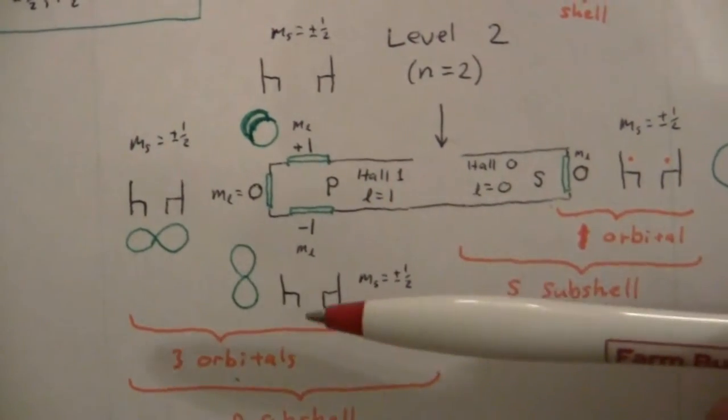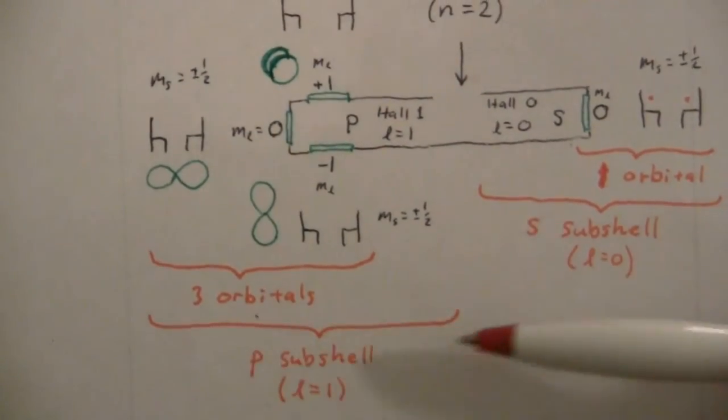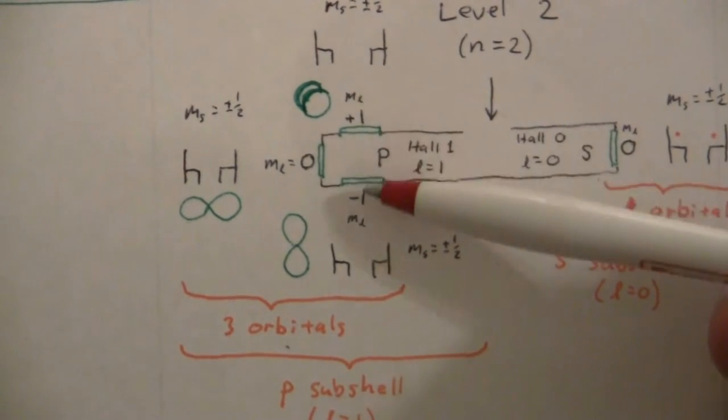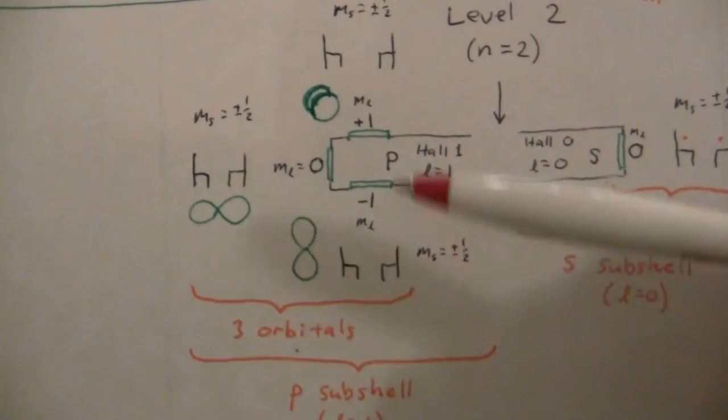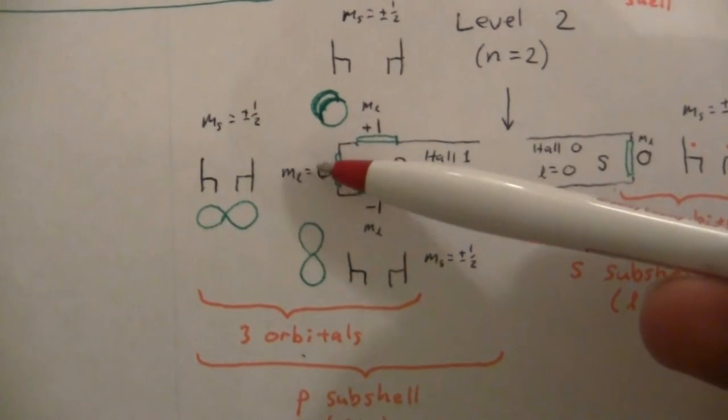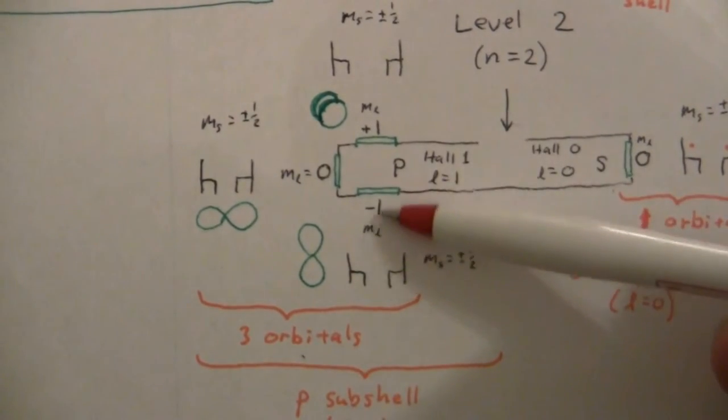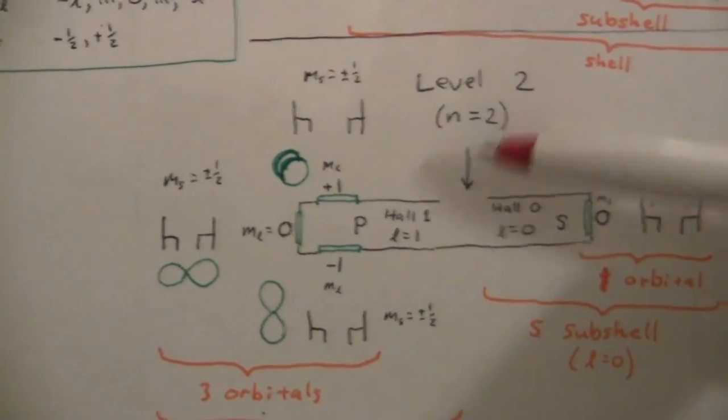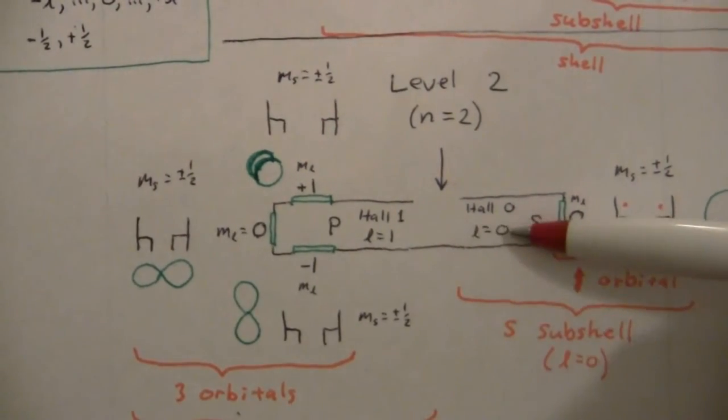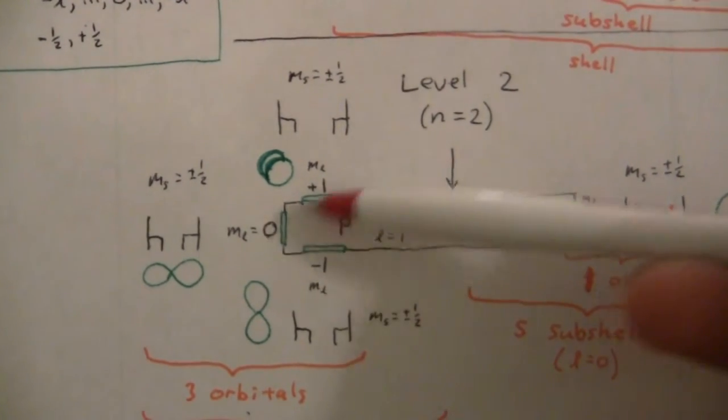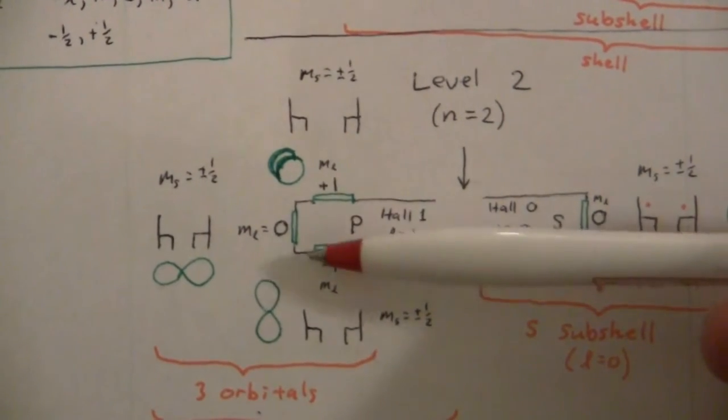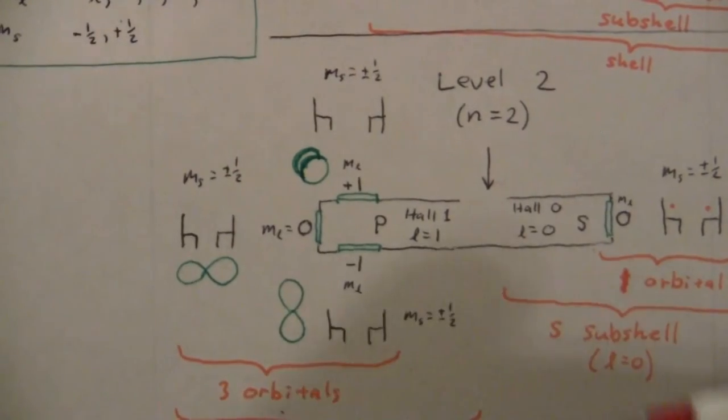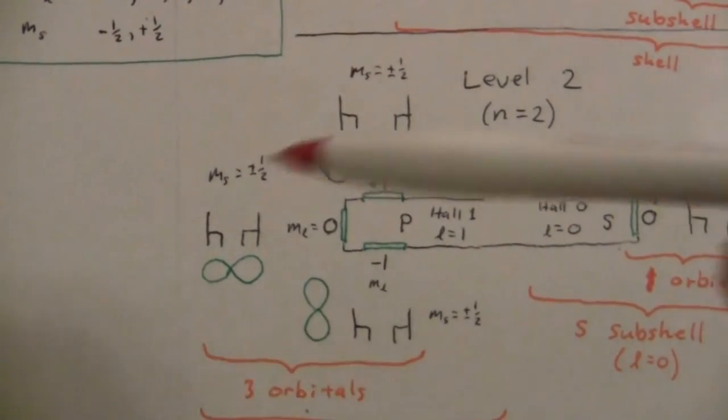And here is the P wing, or the P subshell. That's this hallway when L equals one. And you'll notice here, we have not only the door at the end, but doors on either side of the hallway. We have one set of doors, where each room, each doorway is numbered. M sub L is zero, one, or negative one. So here are the quantum numbers represented. The level, that's N, N equals two. The hallway, or the wing, L equals zero. So N, L, and then M sub L. That's referring to the doors or the rooms. And then we have the spin, M sub S, plus or minus one-half. That's for the individual chairs, if you will, that the electrons are in.